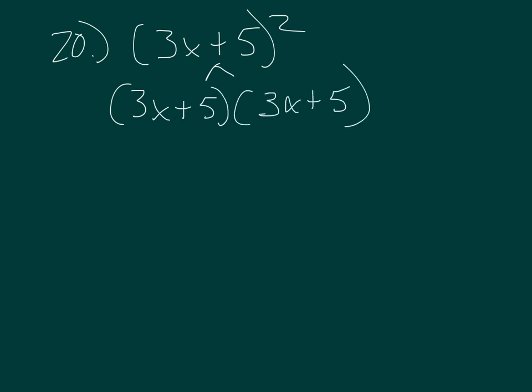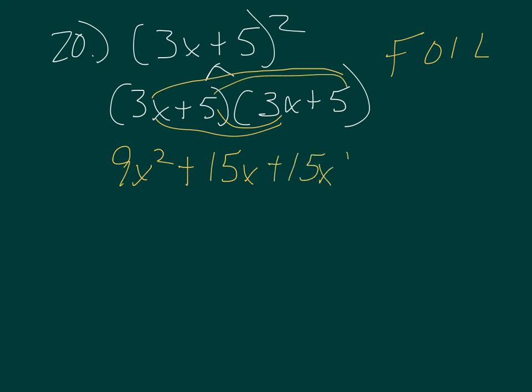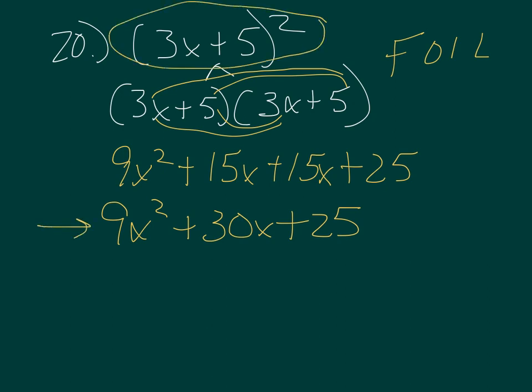Number 20. Simple multiplication. 3x plus 5 squared. If I break that out, I'm going to say this is 3x plus 5 times 3x plus 5, and then I can FOIL. 3x times 3x is 9x squared. 3x times 5 is 15x. 5 times 3x is another 15x. 5 times 5 is 25. 15x and 15x are like terms, so I'm going to put those together. 9x squared plus 30x plus 25.